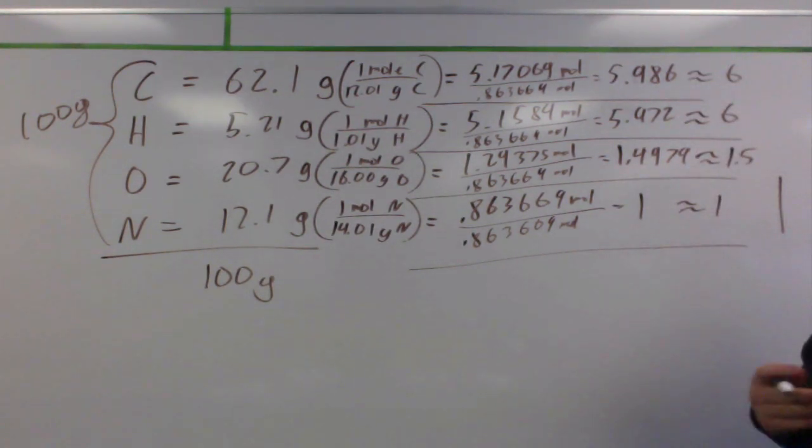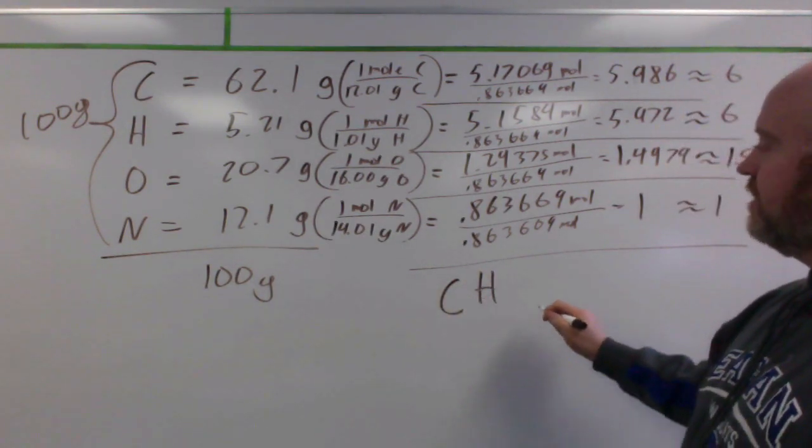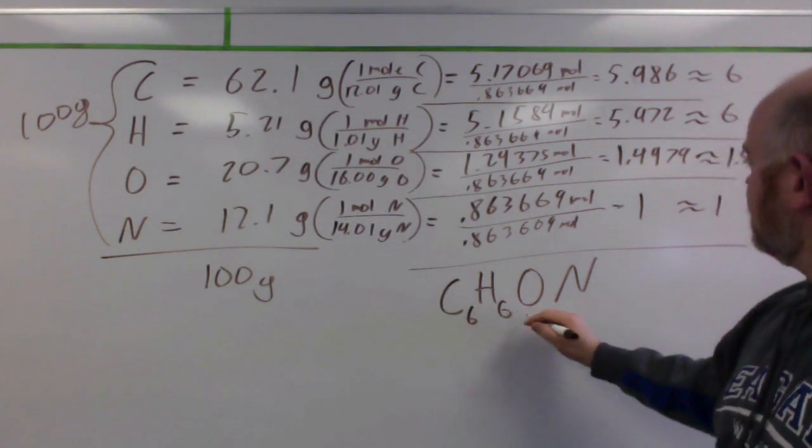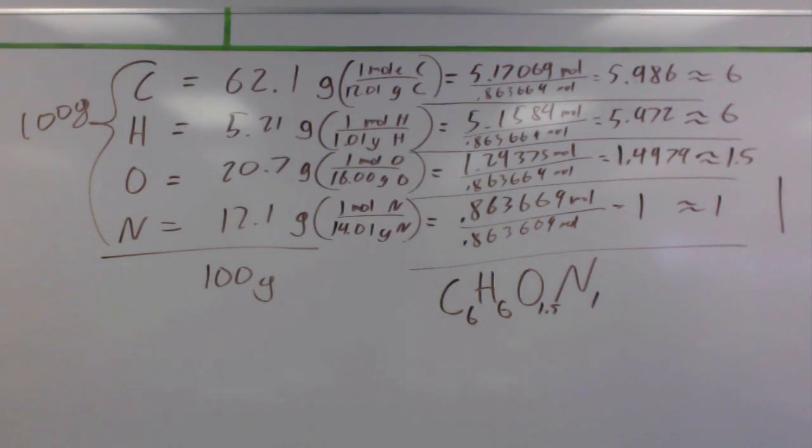Now, for my empirical formula, if I wanted to write it, carbon, hydrogen, oxygen, nitrogen, this would be my empirical formula if they were all whole numbers, but they're not. So, I can't have a 6 to 6 to 1.5 to 1, that's not possible.